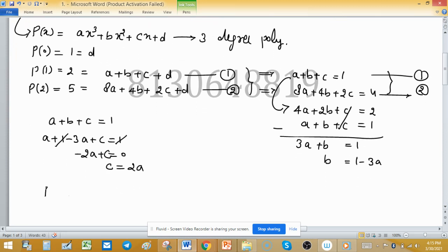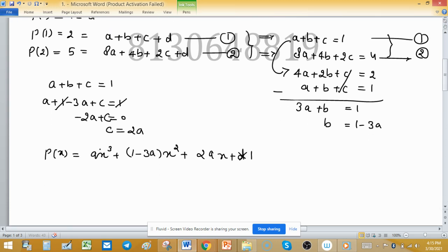Now write polynomial P(x): Ax³, value of B in terms of A is (1 - 3A)x² plus C is 2Ax plus D and value of D is 1. So Ax³ + x² - 3Ax² + 2Ax + 1.